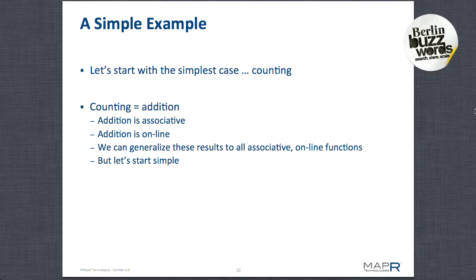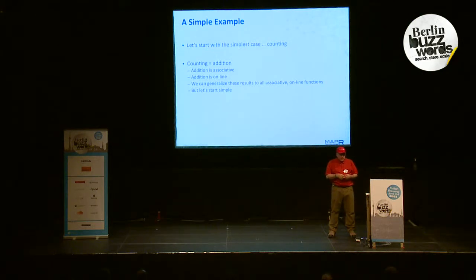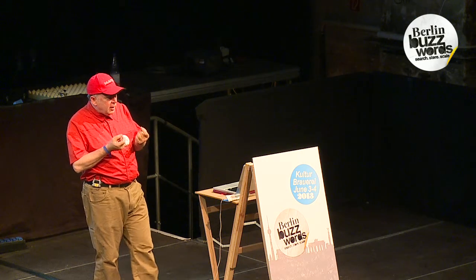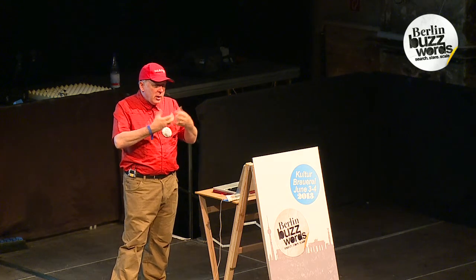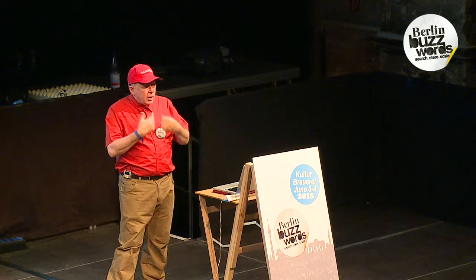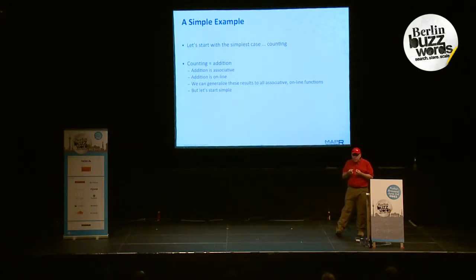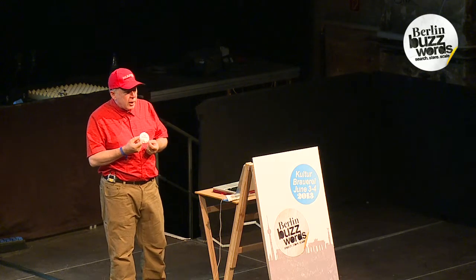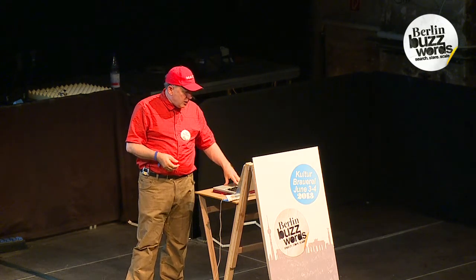So let's take the simplest case: counting. Let's work out an architecture which gets this exactly right. Counting is a very nice thing — partly because people want us to do it, partly because it's incredibly difficult to do correctly. But the nice thing about counting is it exhibits properties of associativity and commutativity, which allow us to decompose counting into pieces. It's an online algorithm. If we build a good architecture for counting that really works correctly, we should be able to generalize it to any associative online algorithm.